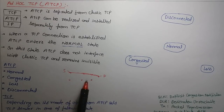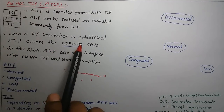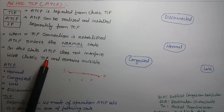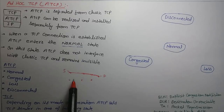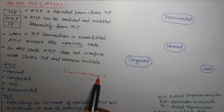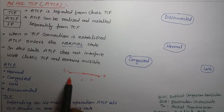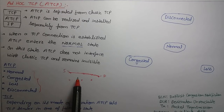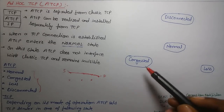When a TCP connection is established, ATCP enters the normal state. In this state, ATCP does not interface with classic TCP and remains invisible. So when the connection is established, ATCP is in the normal state. There are four states in which ATCP works, and the non-state is the connection established state. In the normal state, different modes operate differently.